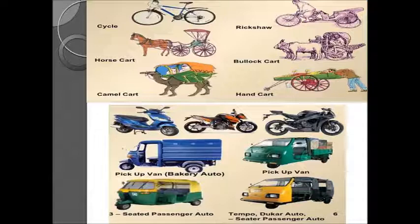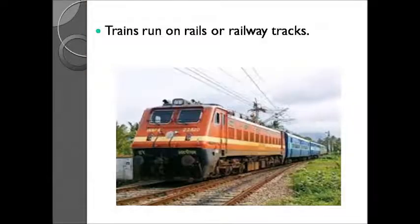Some vehicles are pulled by men or animals — cycle, horse cart, camel cart, rickshaw, and bullock cart. Others like bike, scooter, van, and auto rickshaw are driven by engines. Trains run on rails or railway tracks. This is also a mode of transport used on land.